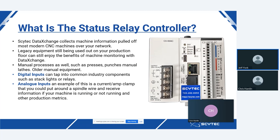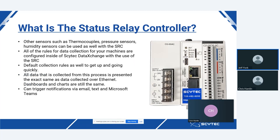There are two different kinds of inputs on the SRC. We have digital inputs, which can tap into common industry components such as stack lights or relays, as well as analog inputs. An example of an analog input would be a current sensor or amp clamp that you could put around a spindle wire to receive information on whether the machine is running and other production metrics. We can connect from all sorts of different sensor types — common ones include thermocouples, pressure sensors, and humidity sensors — and all the rules for data collection can be configured inside of SciTech Data Exchange.